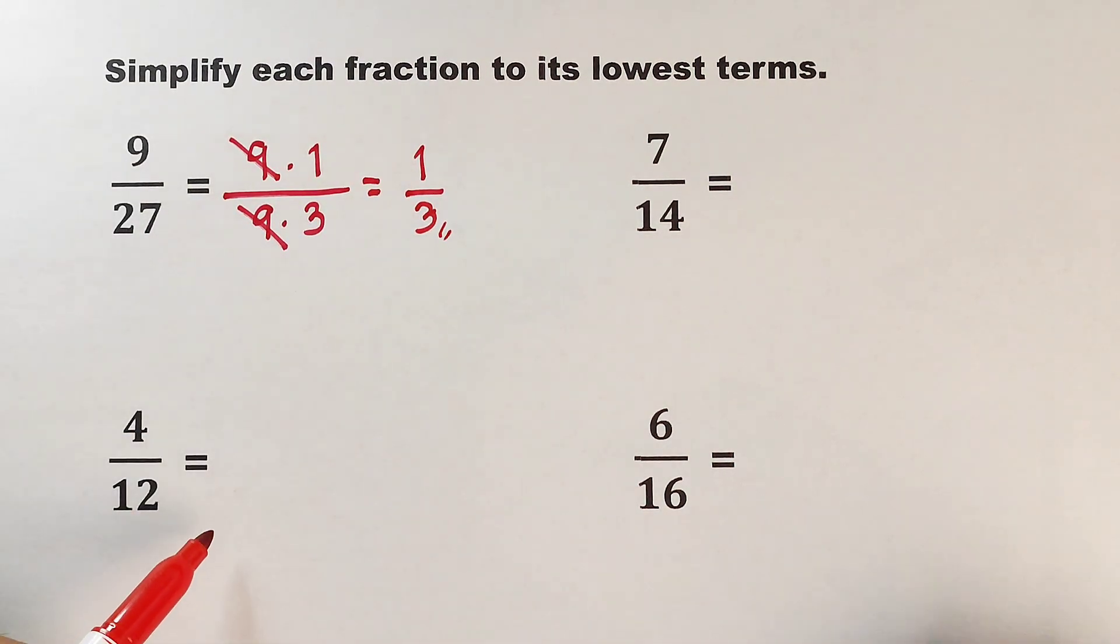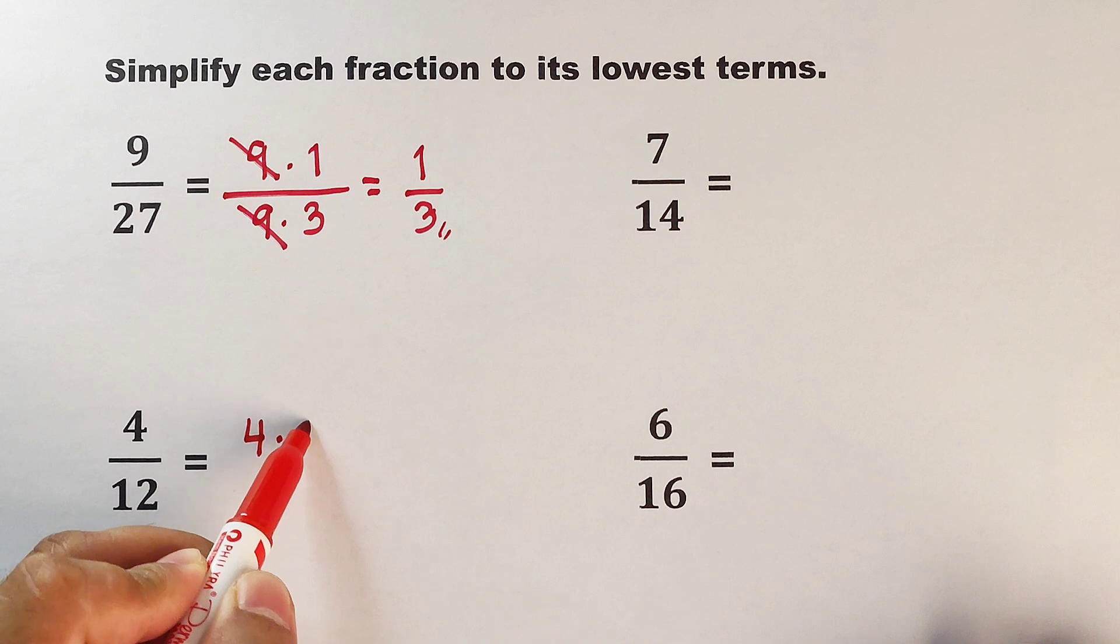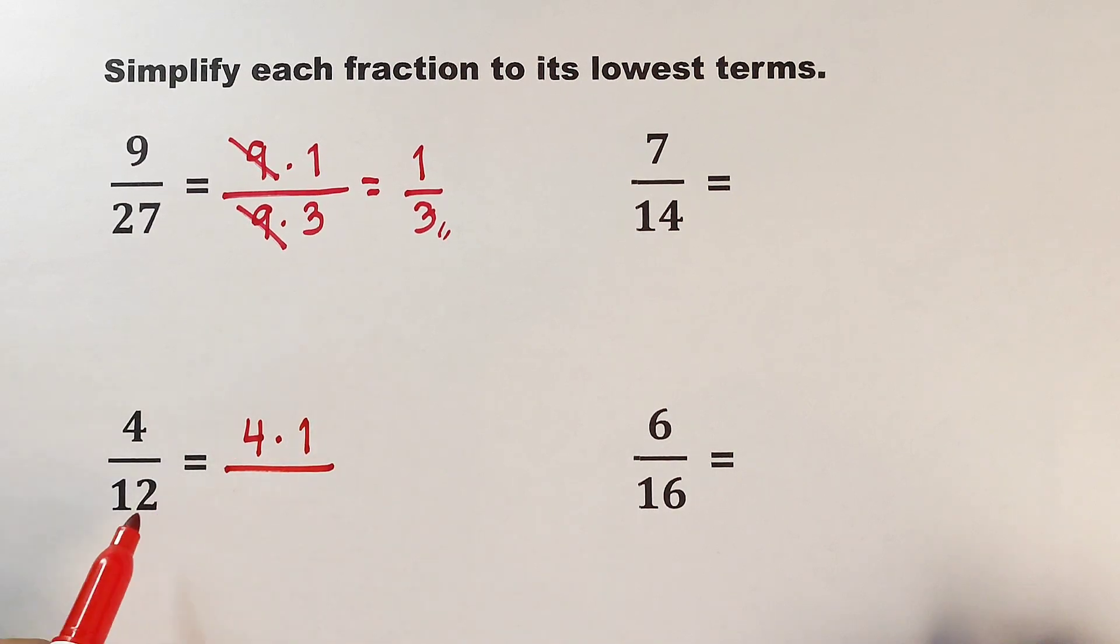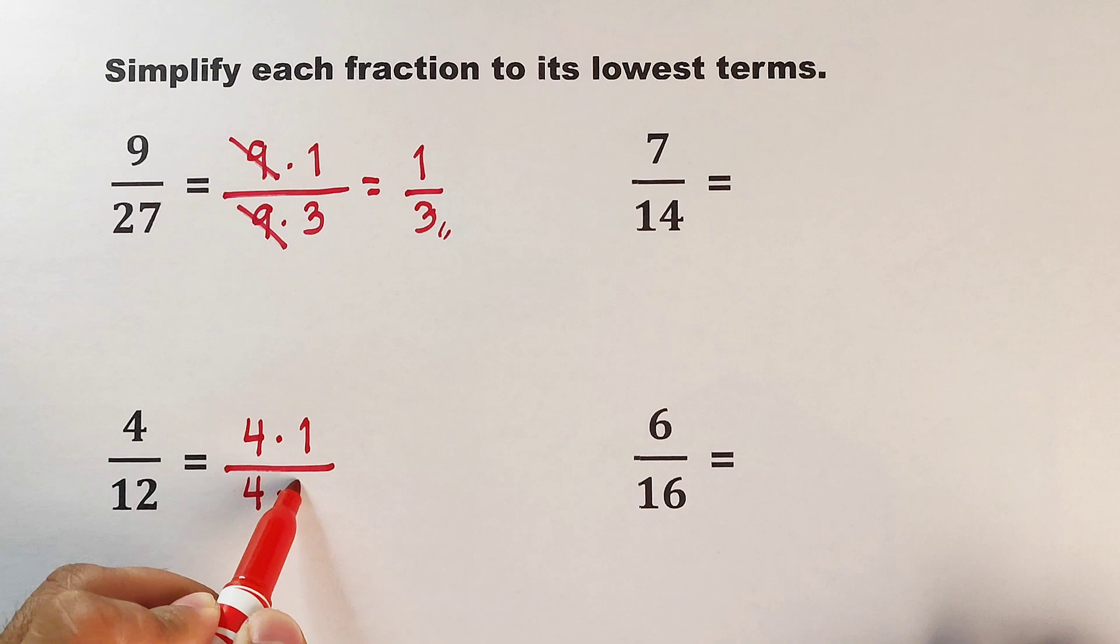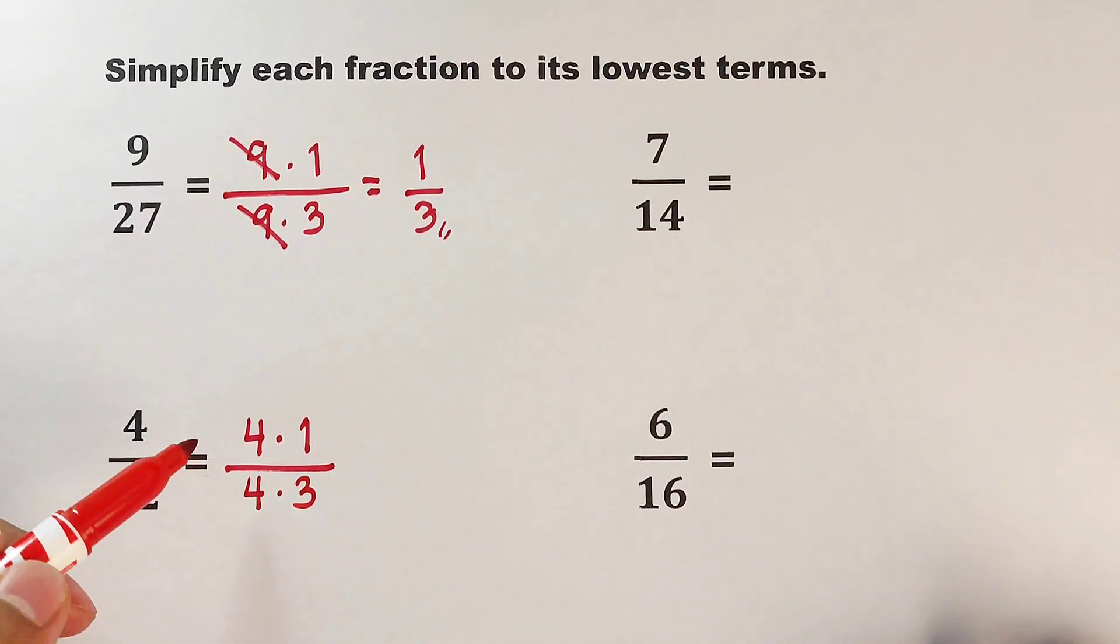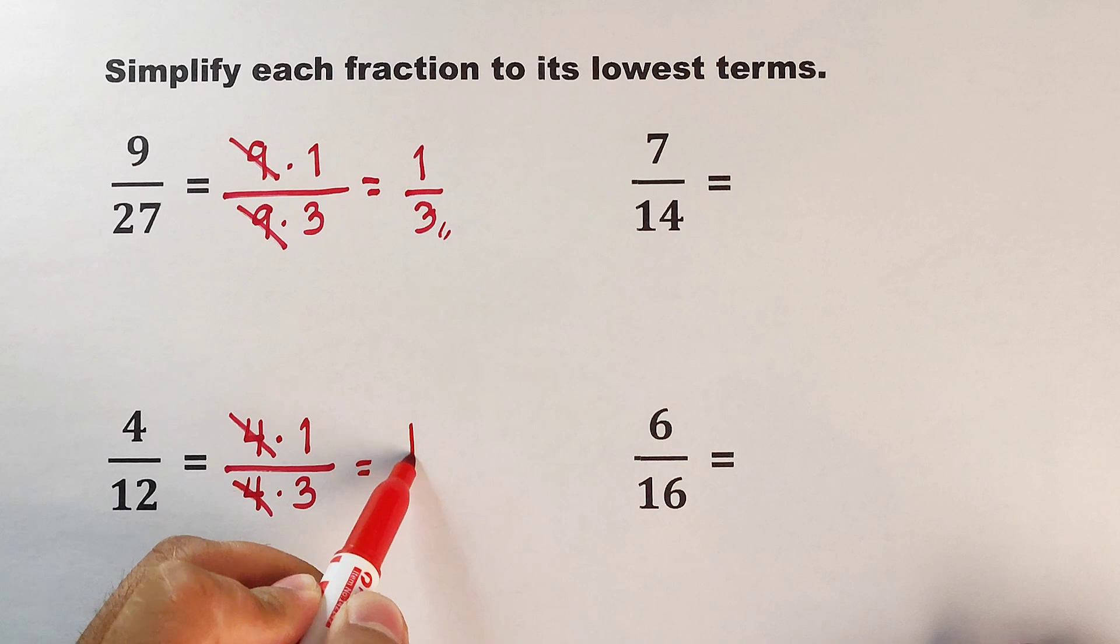Now let's move on with the second item. We have 4 over 12. Here, 4 can be expressed as 4 times 1 over 12 can be expressed as 4 times 3. As you can see, we can eliminate 4 and 4, and the answer is 1 third.